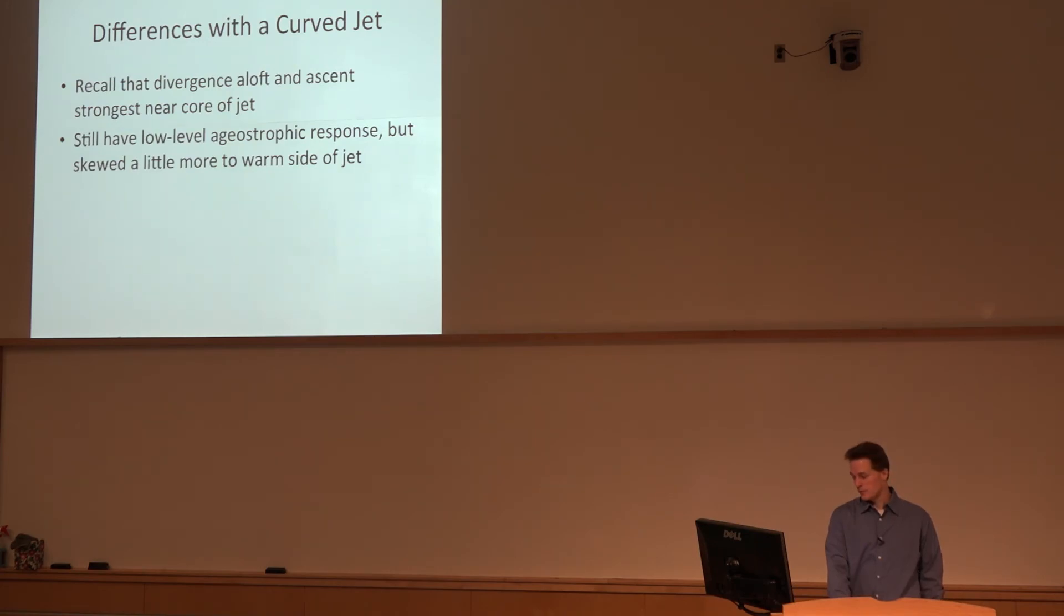You still have the ageostrophic response, but it's skewed toward the warm side. The idea here is don't get too hung up if you're trying to forecast severe storms and say, oh well this is the right exit region of this curved jet, there can't be severe storms. There's an awful lot of outbreaks that occur in that area because everything else is favorable there. It's not just the deep layer vertical response that matters, you have to consider the entire profile.